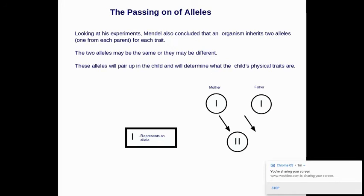And looking at his experiments, Mendel also concluded that the organism inherits two alleles, one from each parent. So they get one from the male, in the case of the peas, one from the male flower or male plant and one from the female plant. Or in humans, one from the mother, one from the father. These alleles will pair up in the children and will determine what the child's physical appearance is. One comes from mom, one comes from the father.